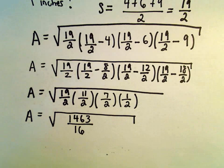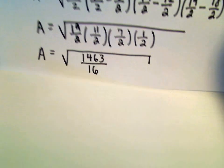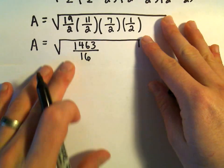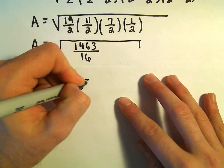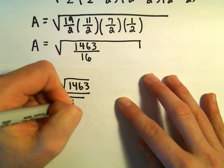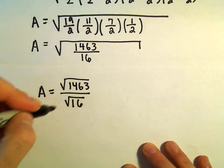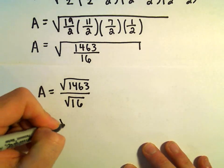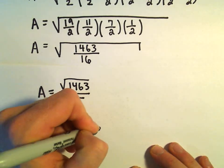And if you want to, we can even break this up a little bit further. We can always even simplify this a little bit more. So we can do the square root of the top over the square root of the bottom. So we can actually write this as the square root of 1,463 over 4.